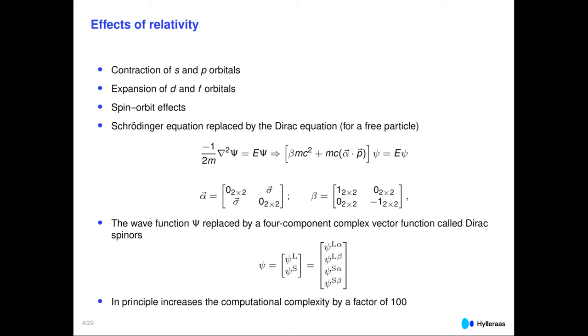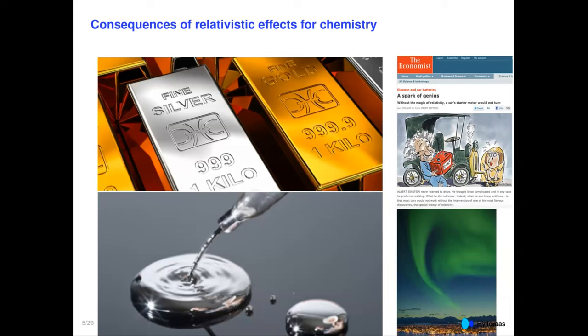What are the consequences? Silver and gold are well-known examples. There's also been great work by Peter Schwerdtfeger illustrating that mercury being a liquid at room temperature is due to relativistic effects. Pekka Pyykkö elegantly demonstrated that the car battery working is a consequence of relativistic effects. I come from northern Norway where the sun has now stopped rising above the horizon, and some elements of the northern lights are also a consequence of relativistic effects — which is an encouragement to come visit in winter.